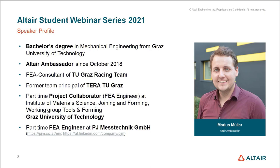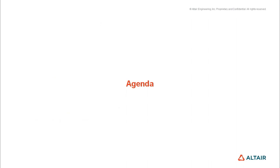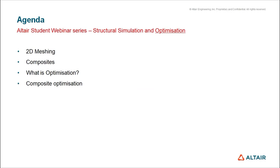I am FEA engineer at PGM Math Technique GmbH, a worldwide leading specialist in railway systems. The Austrian company was founded in 2006 and has realized projects in 30 countries and 5 continents, with about 60 employees. PGM Math Technique is an accredited test center by ISO IEC 17025, focusing on approval tests for railway vehicles. PGM Monitoring is a technological leader in automation and digital systems for rail freight transport. Today's agenda covers 2D meshing, modeling composites, what optimization is, and composite optimization.